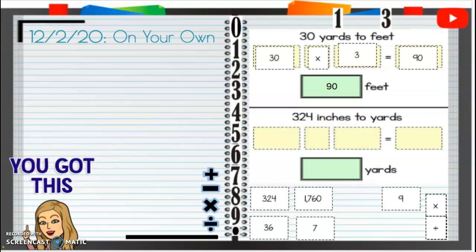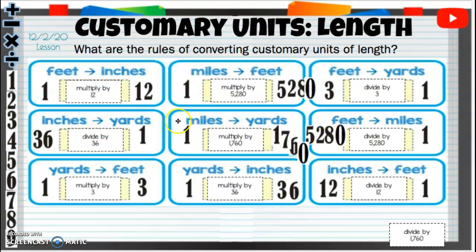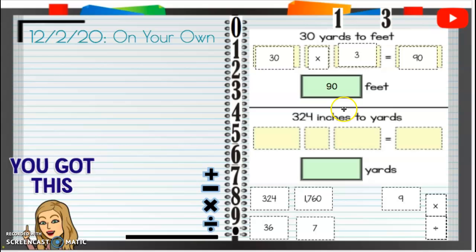Well, I know that there's 12 inches in a foot, and there's three feet in a yard. So inches to yards, we're going to divide by 36.